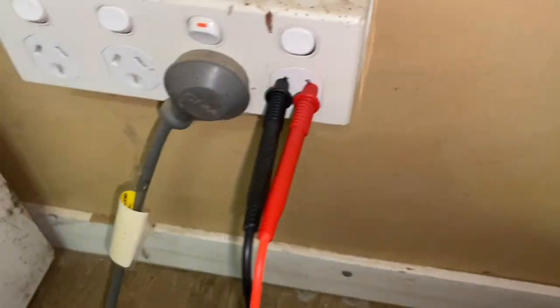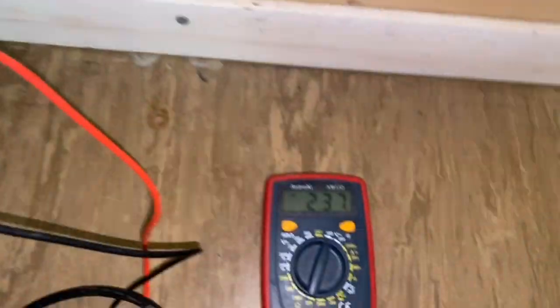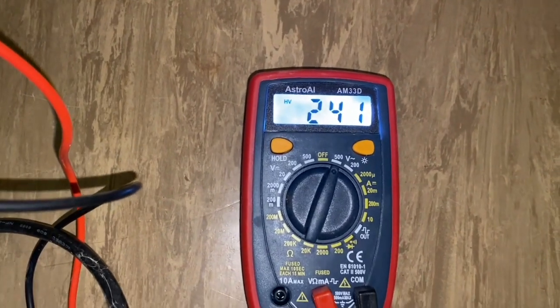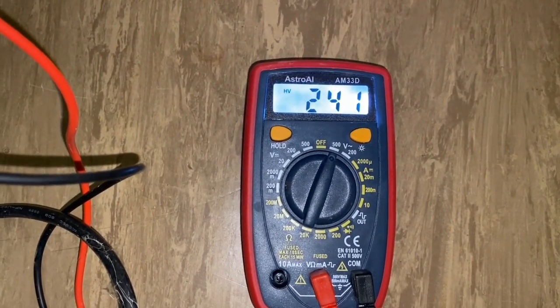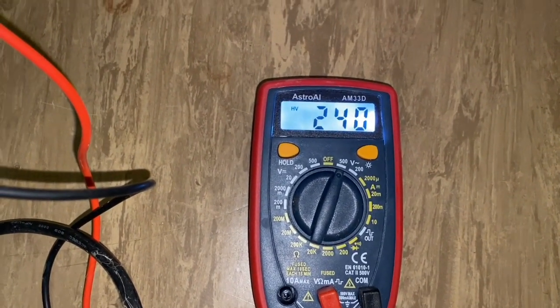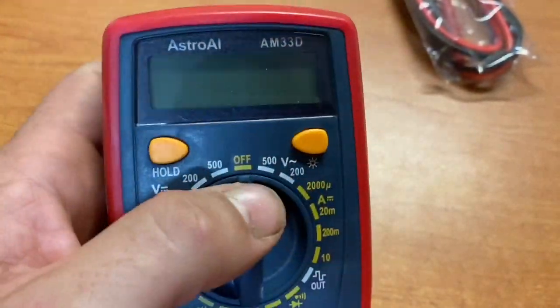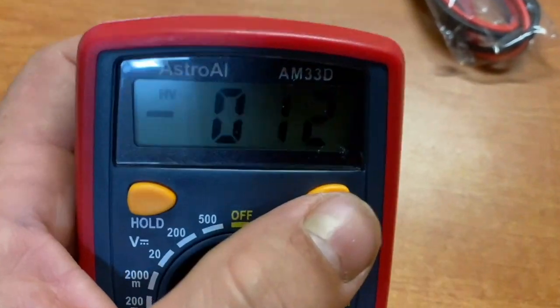So now my electrician mate is hooking this up to the GPO, the wall power, to see how that works. We've got 240 volts, which is what you will have in Australia at the wall, and that's reading right on. So that's pretty accurate. Not that a diesel fitter is ever going to use that.